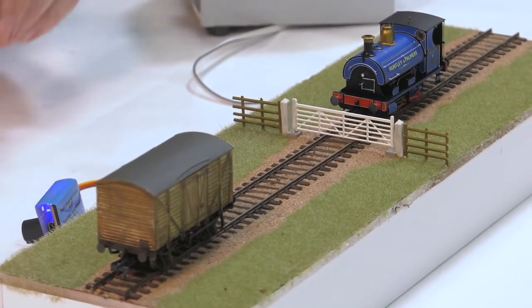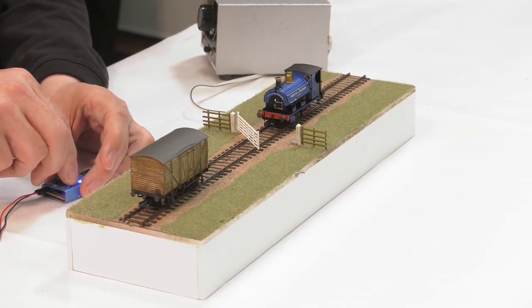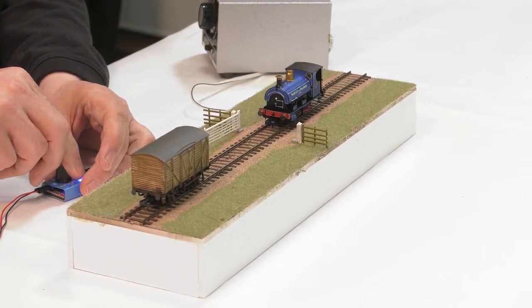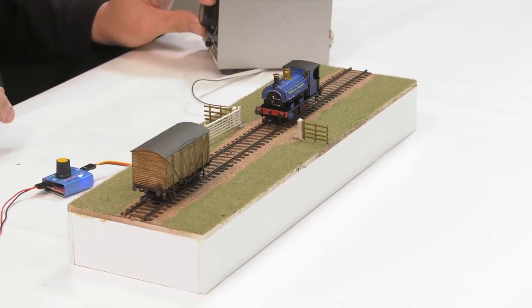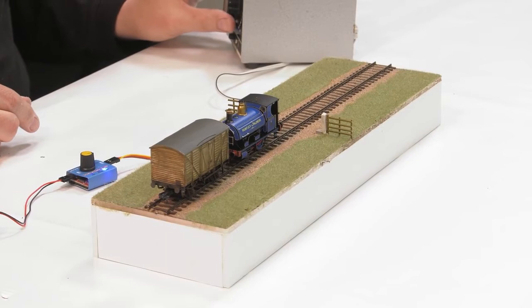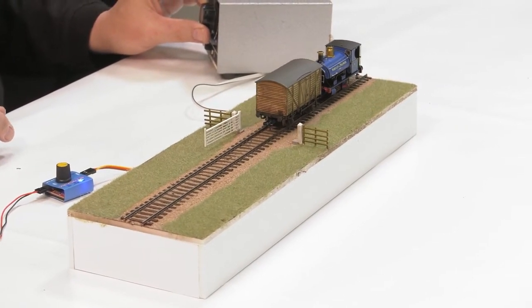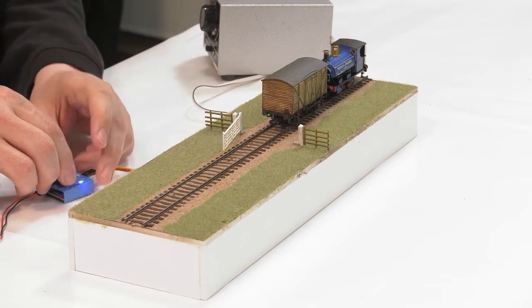We drive the loco up to the gate—very simple—and then as if by magic the gate opens. Drive the loco out, pick up the wagon, and the gate closes.